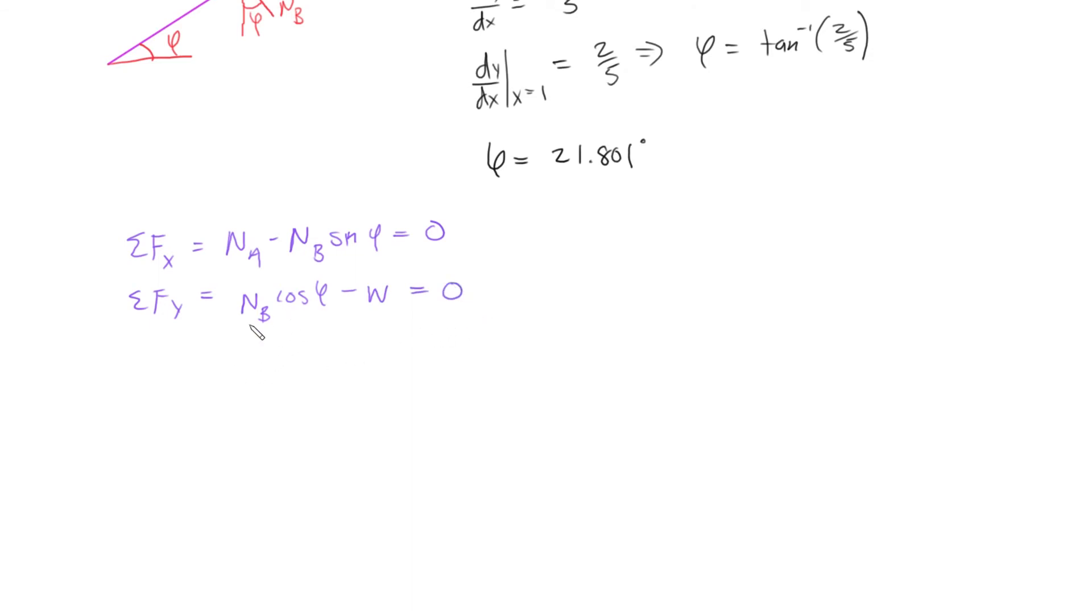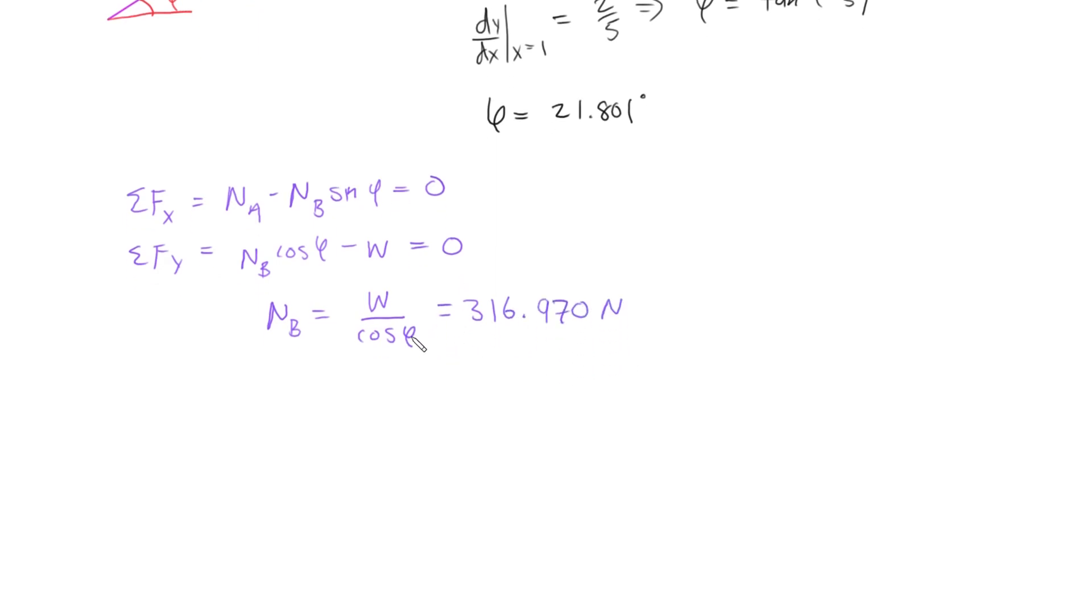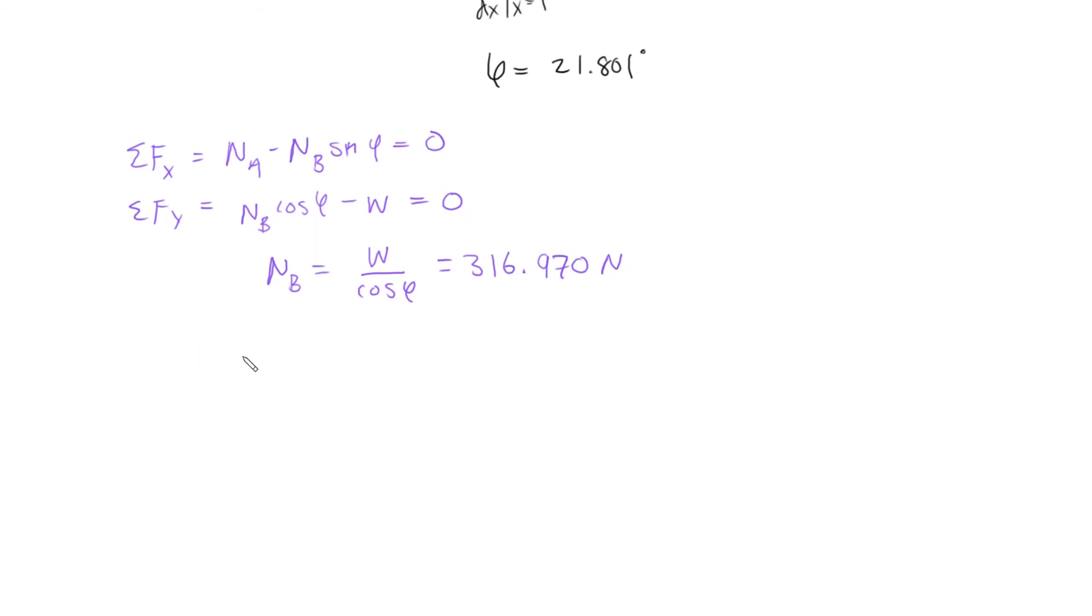From the second equation we could say that NB is equal to W over cosine phi, which is 316.970 newtons. And then from there we could define NA, so NA will actually equal NB sine phi, so NA equals 117.718 newtons, which is all we need to solve this problem.